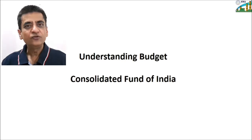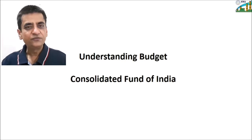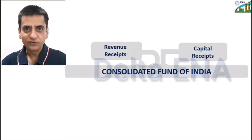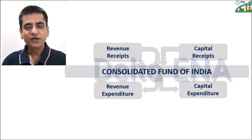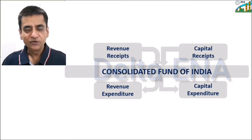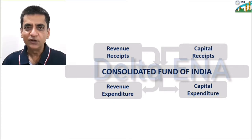A nation maintains a consolidated fund where the funds come from total receipts, which is divided into revenue receipts and capital receipts. The same consolidated fund is used for the purpose of expenditure, which is again divided into revenue expenditure and capital expenditure.